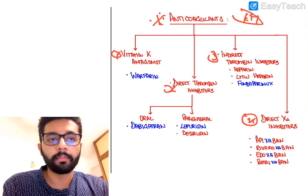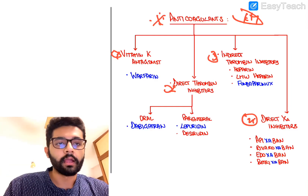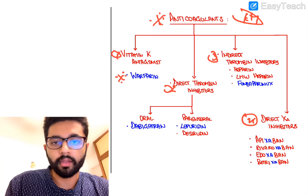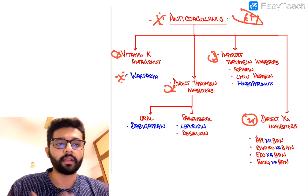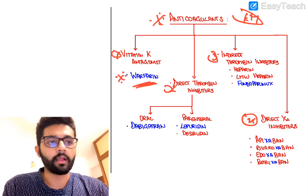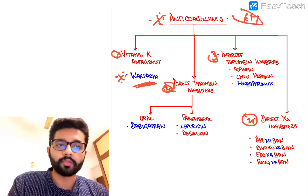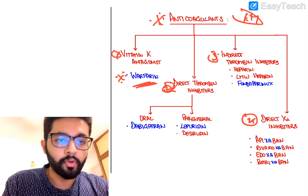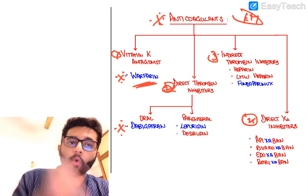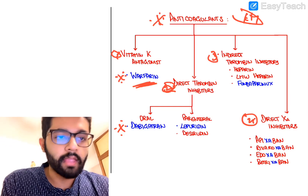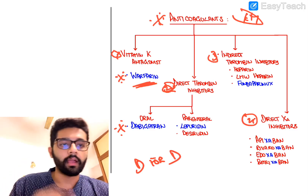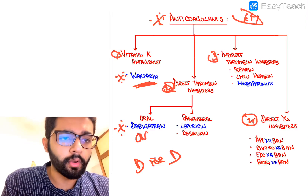Vitamin K antagonists — the most important one is warfarin. Vitamin K is required for gamma carboxylation and functioning of clotting factors, so when vitamin K is deficient, clotting factors are affected. Warfarin is the only important vitamin K antagonist and it's an oral drug. For direct thrombin inhibitors, the most important drug is dabigatran — a direct, oral thrombin inhibitor, and it is the only oral direct thrombin inhibitor.